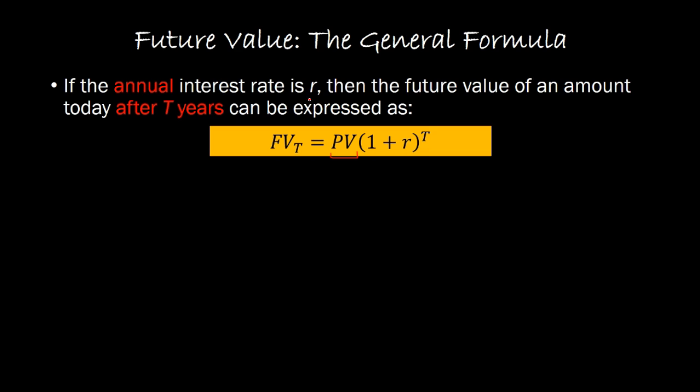where r is your annual interest rate, and t is the number of years that you're going out into the future.